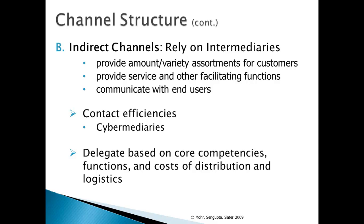Indirect channels rely on an intermediary. The flow of product would go from the manufacturer to some sort of a retailer and then to the customer. The primary reason for using intermediaries is because it affords contact efficiencies in the channel. If there are three manufacturer brands — say Dell, Asus, and Apple — and three consumers looking for goods, if every consumer had to go to every manufacturer, it would be three times three, or nine interactions. But if each consumer goes to one retailer and each manufacturer deals through one retailer, then it's three plus three interactions. And even online, many consumers prefer to shop through an intermediary because of these contact efficiencies.